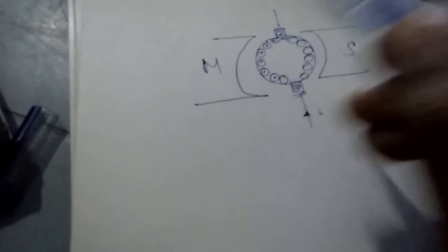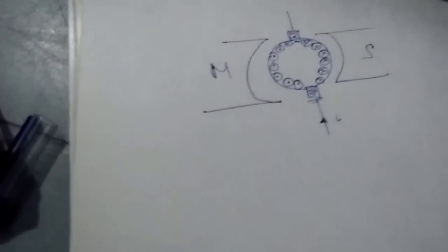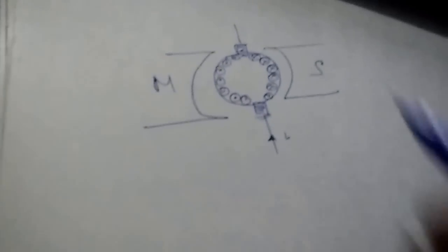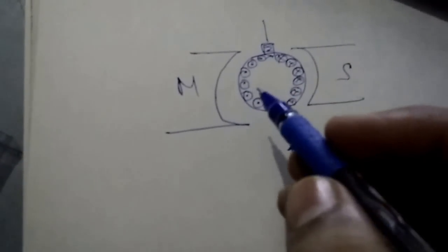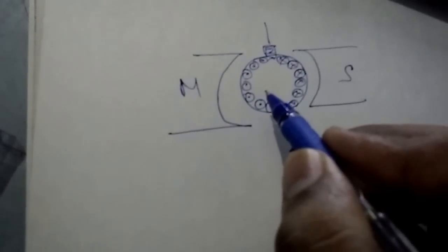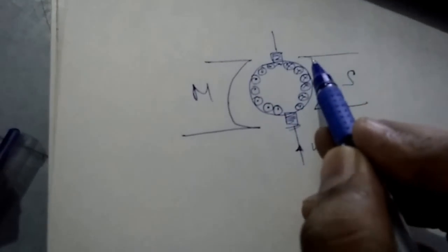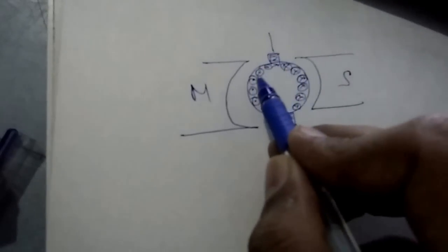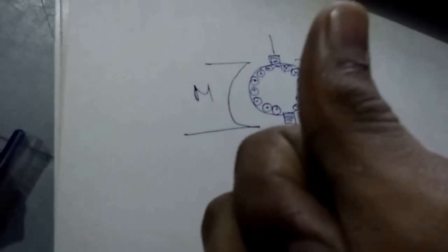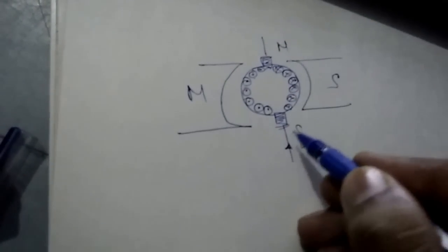A dot means current is coming out of the plane and a cross means current is going inside the plane. You have two options: either use Fleming's left hand rule or use a simple thumb rule — curl your thumb in the direction of current and your thumb will give you the direction of the north pole, and this will be the south pole.